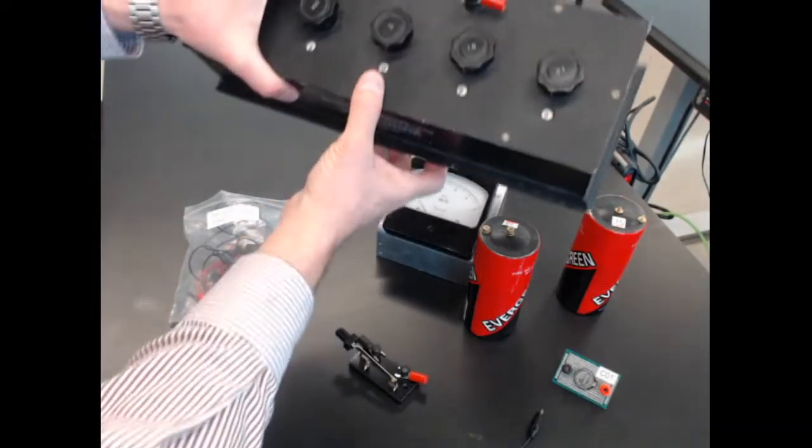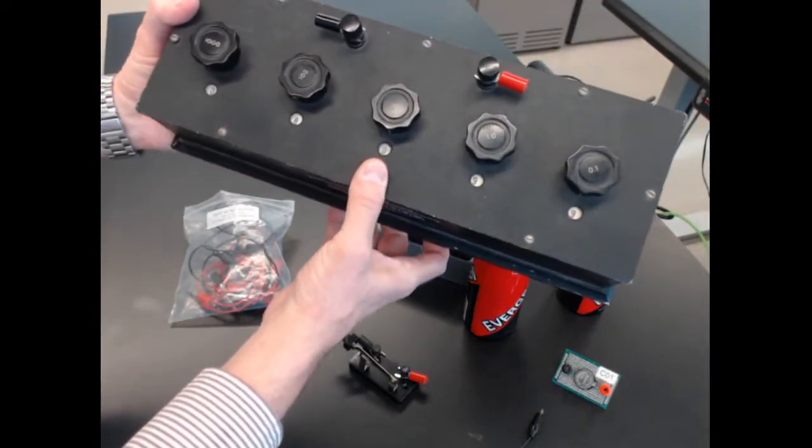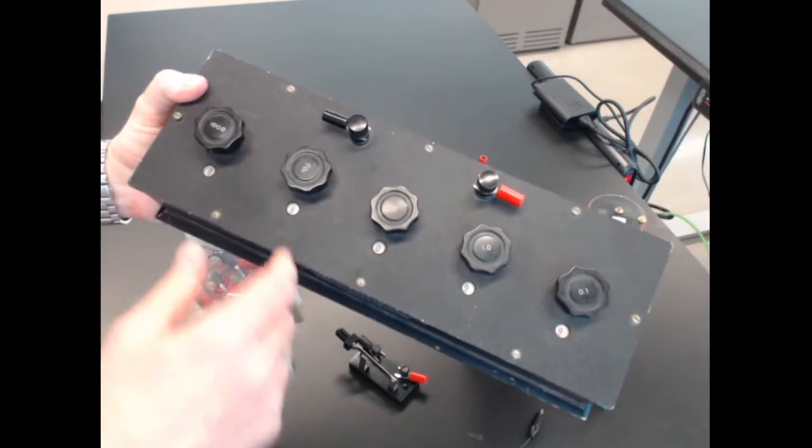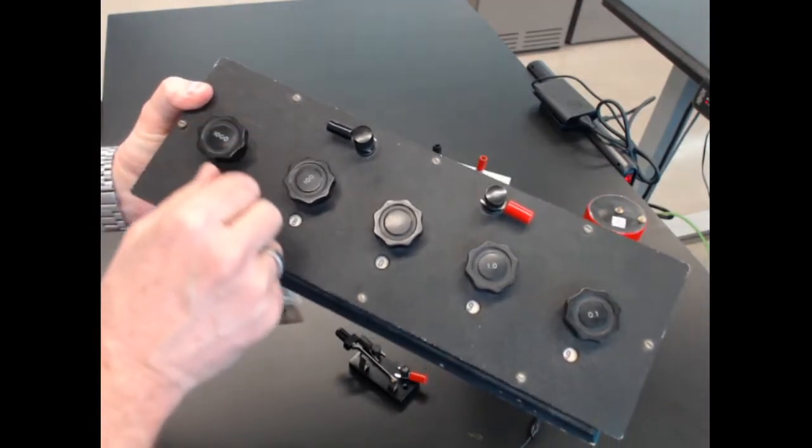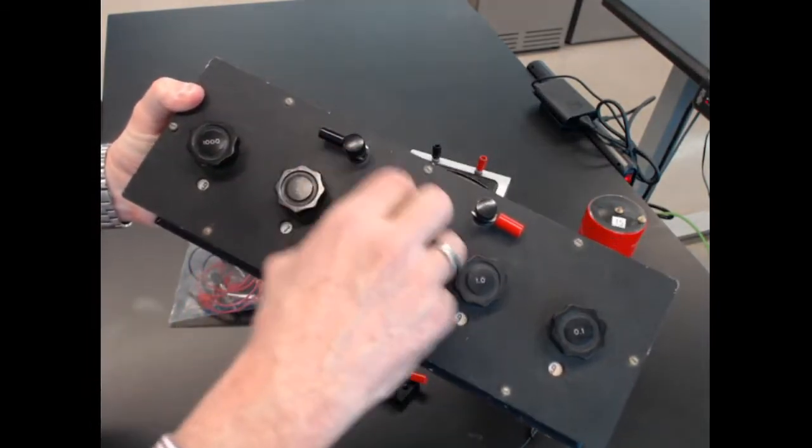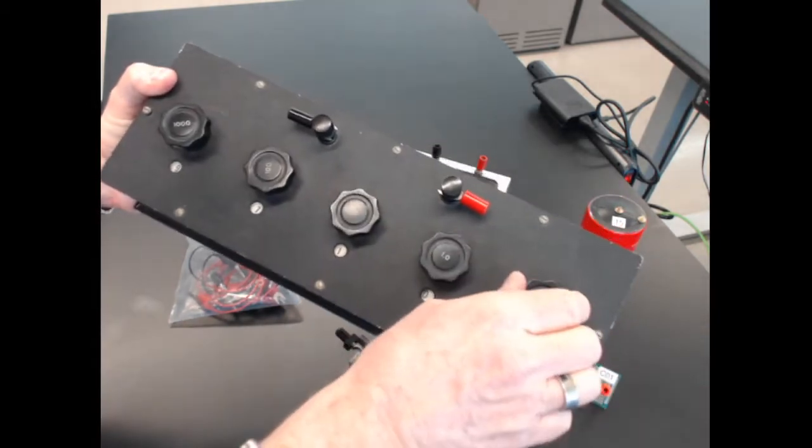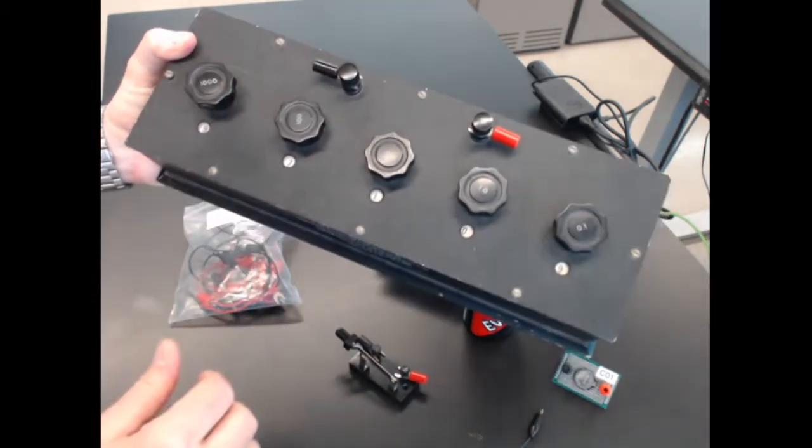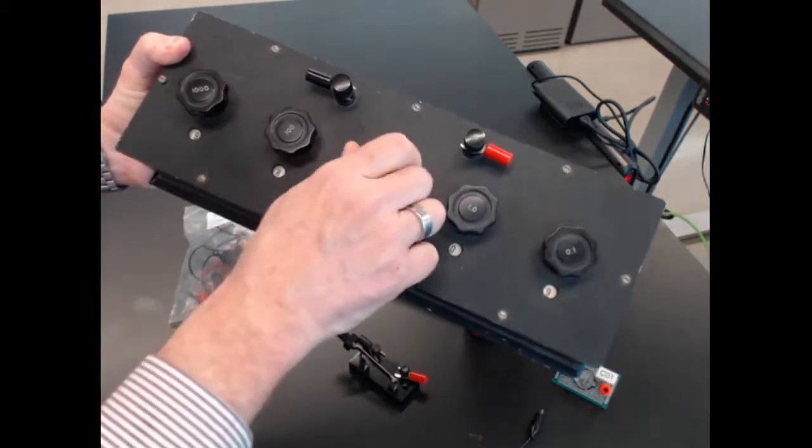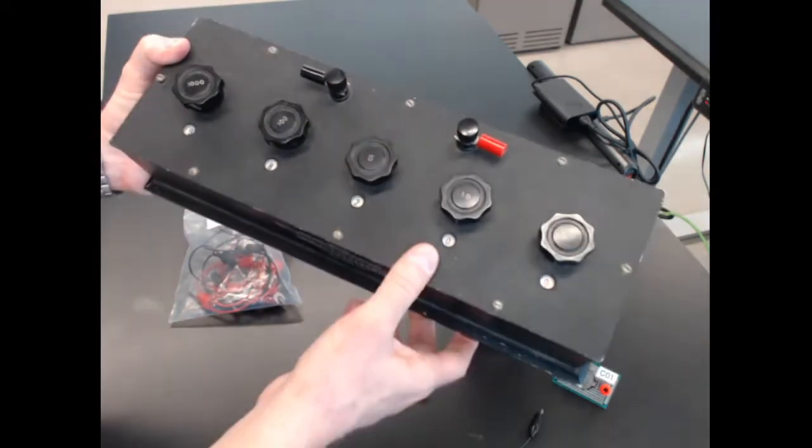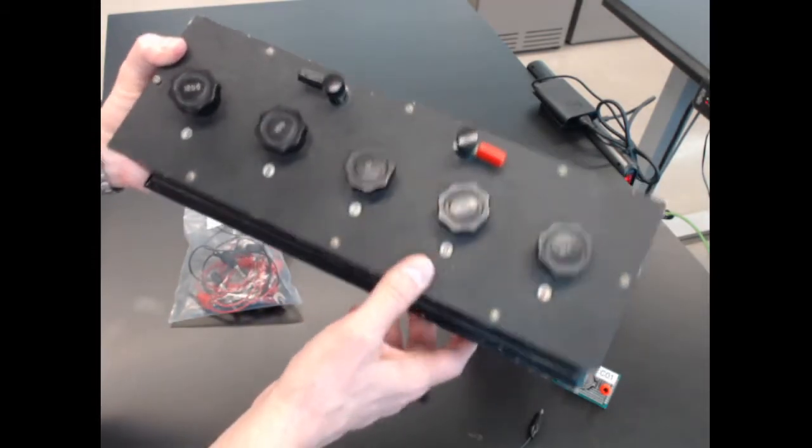This is a decade box. It's a big variable resistor that allows us to change the resistance just by dialing in the number we want, and it's precise to 1%.